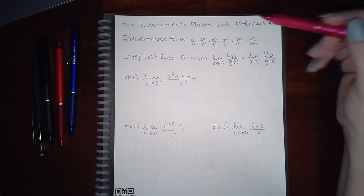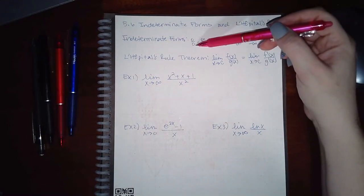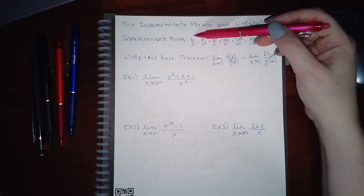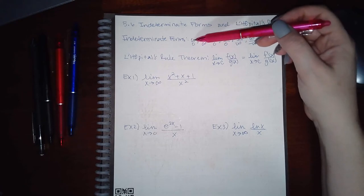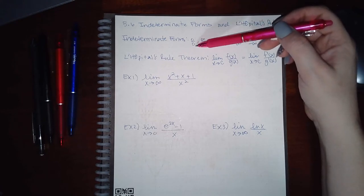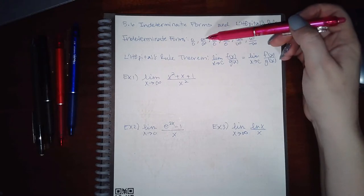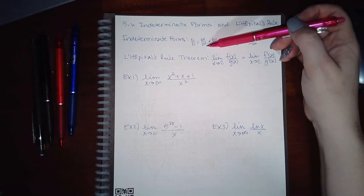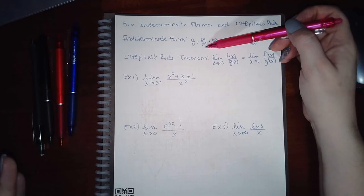There are many different indeterminate forms. Zero over zero is not one because anything divided by zero is undefined, so you get an interesting situation when you have zero over zero. Infinity over infinity is not equal to one because there are infinities that are larger than other infinities — that gets into topology, which we won't cover. You can just trust that certain infinities are smaller and larger than other infinities.